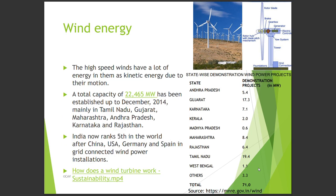Next is wind energy. High-speed winds have a lot of kinetic energy. A total capacity of 22,465 megawatts has been established up to December 2014, mainly in Tamil Nadu, Gujarat, Maharashtra, Andhra Pradesh, Karnataka, and Rajasthan. India now ranks fifth in the world after China, USA, Germany, and Spain in grid-connected wind power installations.